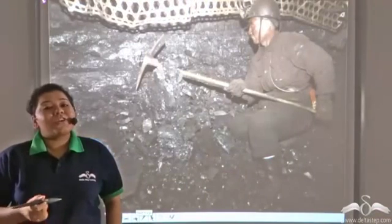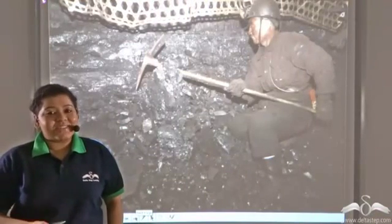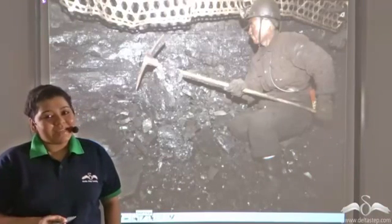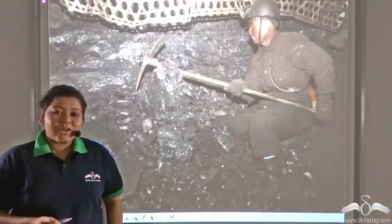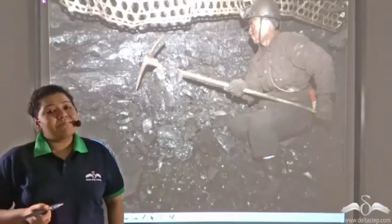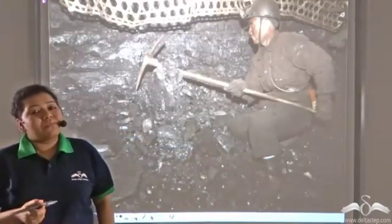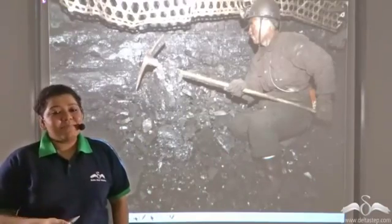Now, for coal to produce electricity, first it needs to be broken down in the coal mines, and the breakdown of coal is done manually by laborers and also through machines in a multi-step process.